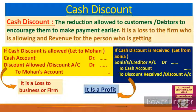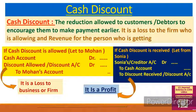Next, let's talk about cash discount. Cash discount is the reduction allowed to customers or debtors to encourage them to make payment earlier. The person to whom we sold on credit — our debtor — is encouraged to make prompt payment by reducing the amount receivable from them. This reduction is called cash discount, which is used to receive cash quickly from debtors.